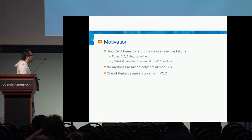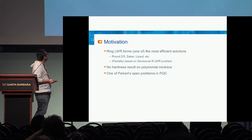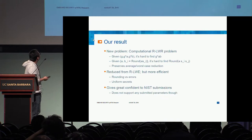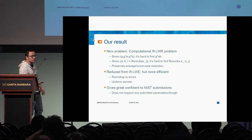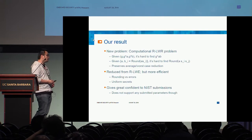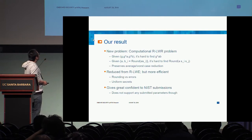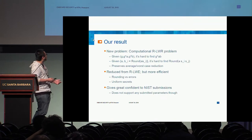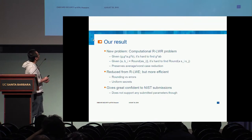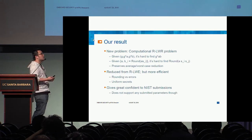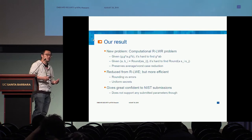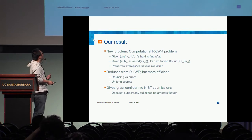It's actually one of the biggest open problems in post-quantum crypto. What we do is define a new problem: computational RLWR, inspired by the computational LWE development. Here we are given A and BI — BI are a couple of ring LWR samples. We are not able to prove the indistinguishability for BI directly, but we are able to prove the indistinguishability for A times Si times Sj. That's the main result.